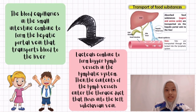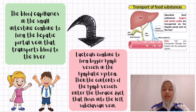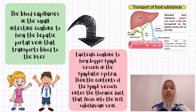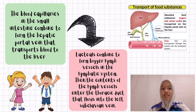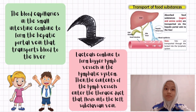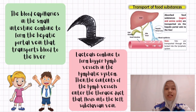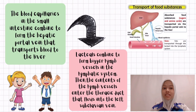The human circulatory system, which consists of the blood circulatory system and the lymphatic system, helps to transport nutrients to cells for assimilation. After absorption of food in the small intestine, blood capillaries combine to form the hepatic portal vein, which transports blood containing glucose and amino acids to the liver. Lacteals that transport droplets of lipid form larger vessels that are part of the lymphatic system, which enter the thoracic duct and flow into the subclavian vein.